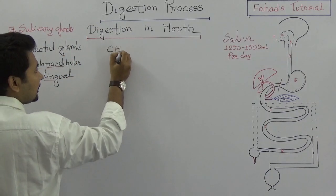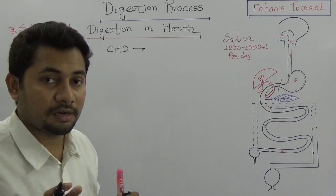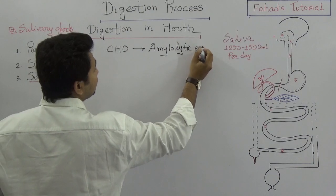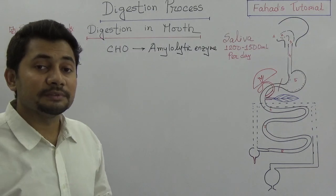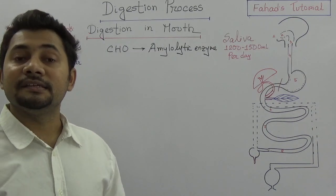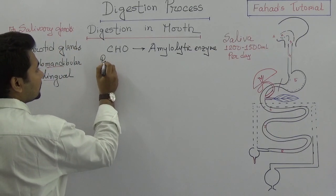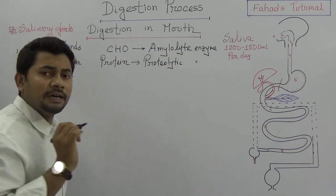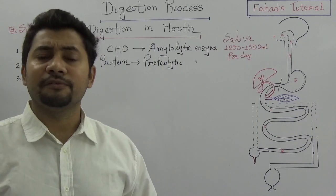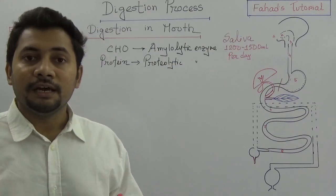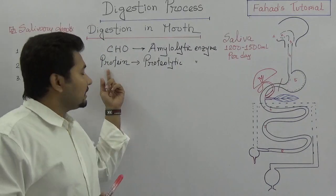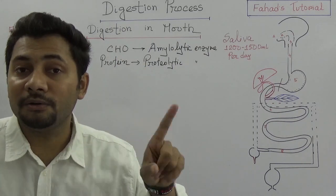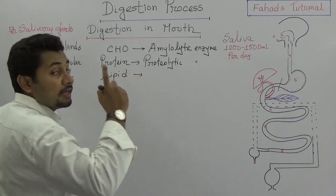When we think about carbohydrate, the enzymes that work on it are called amylolytic enzymes — these are responsible for breaking down carbohydrates. In the case of protein, the relevant enzymes are called proteolytic enzymes. The suffix '-lytic' means breaking down, just as in glycolysis or photolysis — lysis means breaking down. So proteolytic enzymes break down protein. Amylolytic enzymes break down carbohydrates. And in the case of lipid, they are known as lipolytic enzymes.